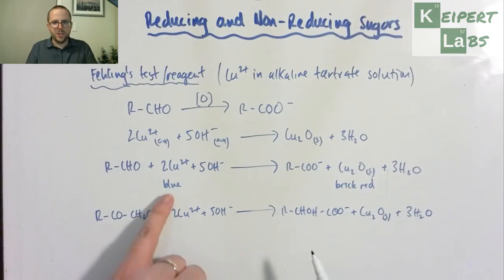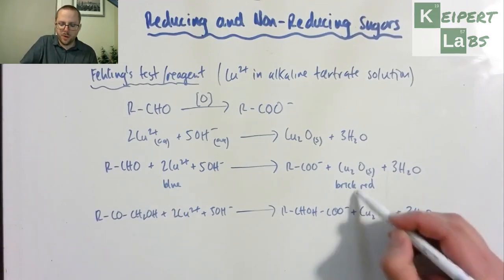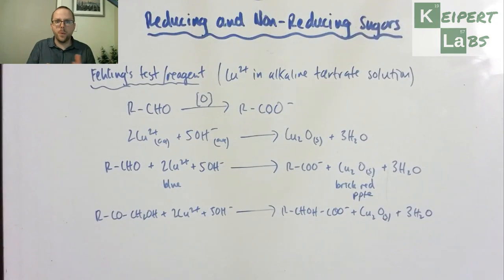So what we have, we've undergone a color change from a blue solution to a brick red precipitate. And that's what we're spotting that tells us that this change has happened. Now what does that tell us about the actual structure of the sugar?